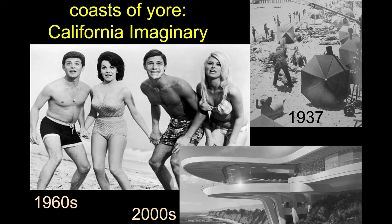We see it everywhere — Tony Stark's retreat is of course in Malibu, in the tony enclave of Malibu, in an insanely futuristic-looking mansion. All of that is the California imaginary: the great, awesome place of abundance and fun.